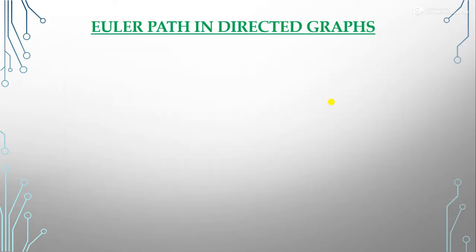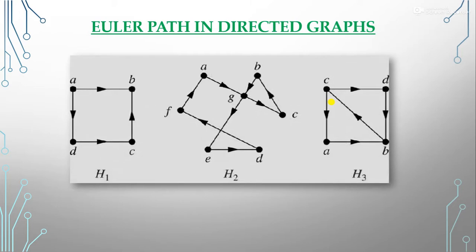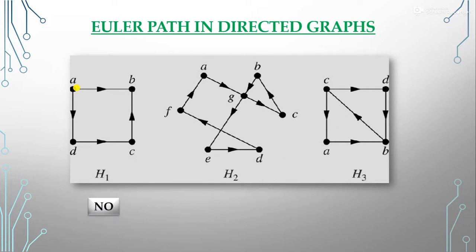Checking Euler paths for the same three directed graphs: the first graph — trying a, d, c, b — we have no edge B to A, so it does not form an Euler path.